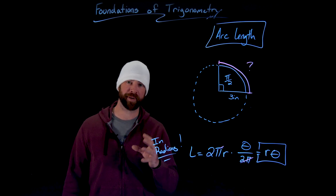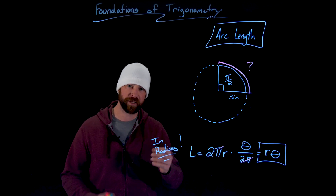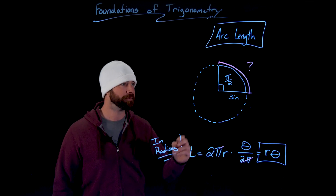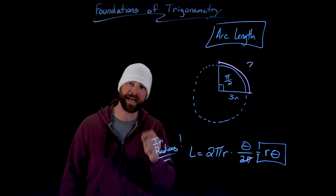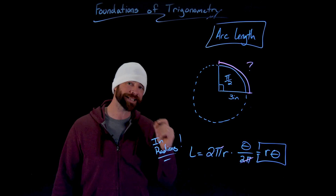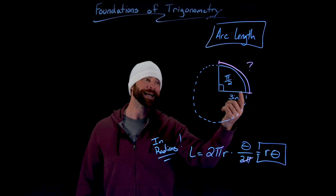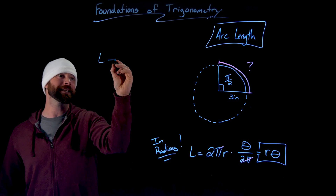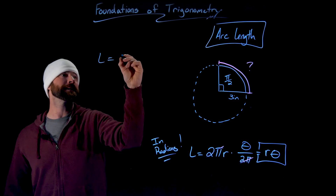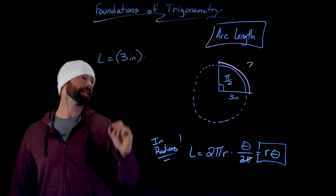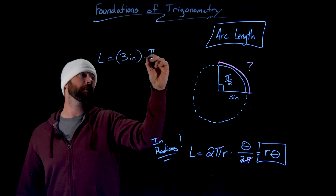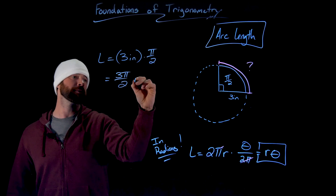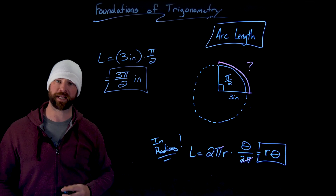Compare that to the formula with degrees: angle times π times radius divided by 180. But if our angle is given in radians, to find the arc length we simply take the radius times that angle. Using this formula, our radius is 3 inches multiplied by the radian angle π over 2, which gives 3π over 2 inches — a whole lot easier.